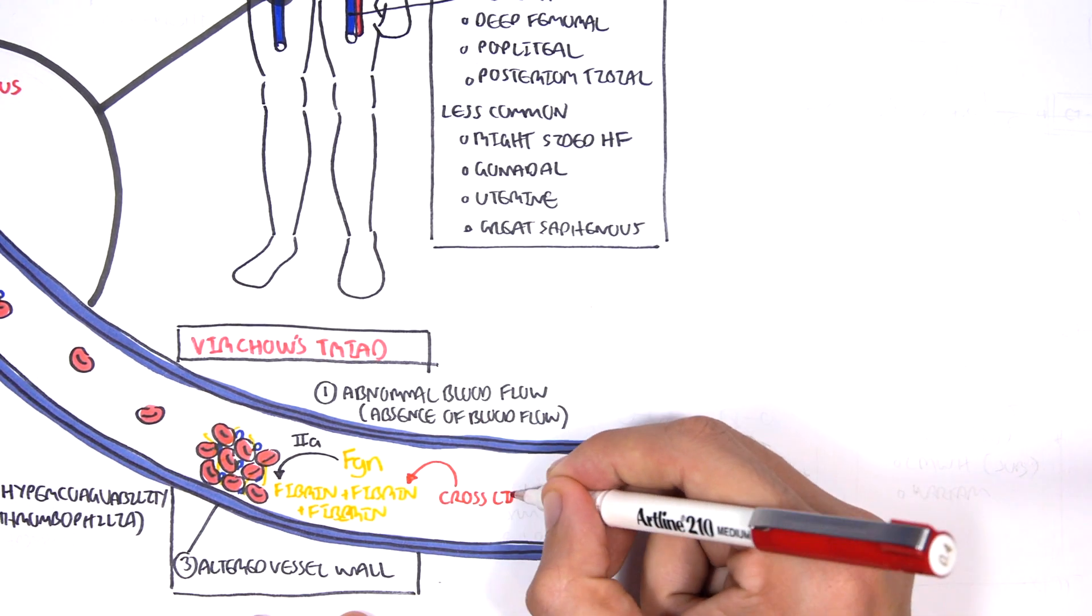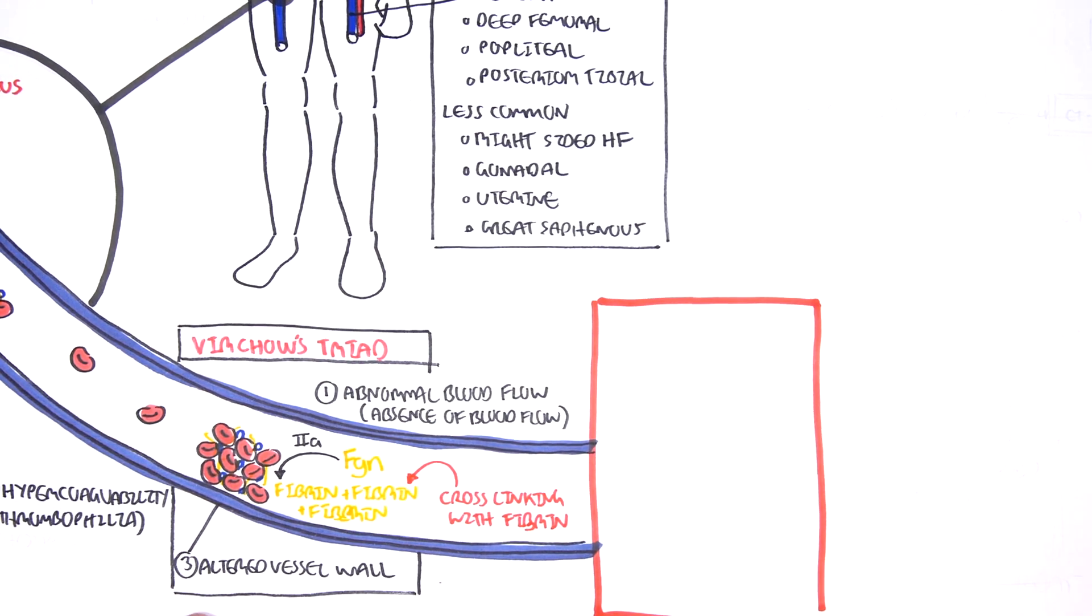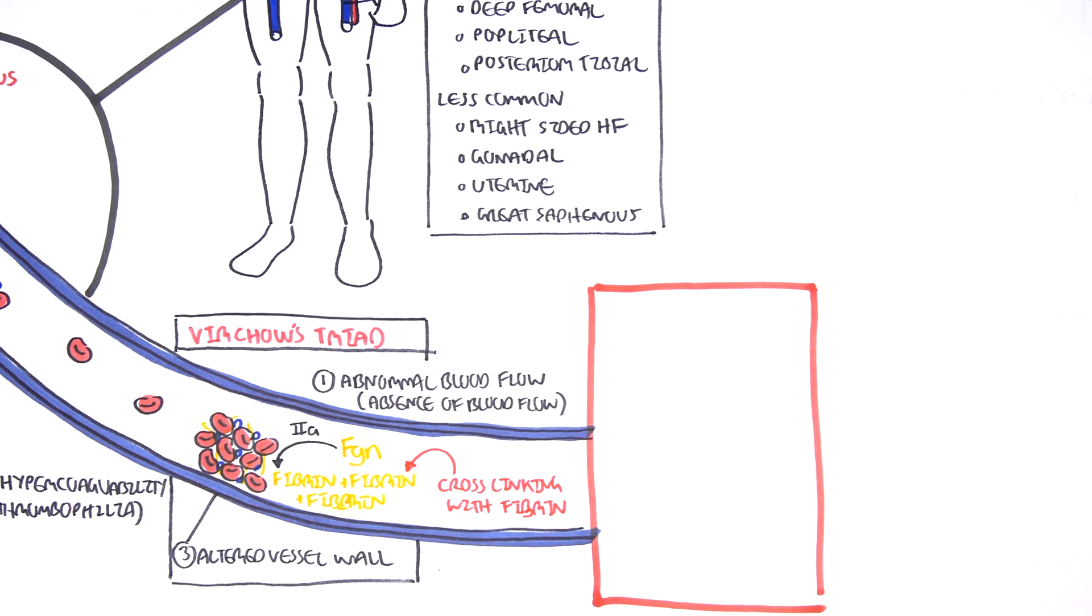Going back to this previous diagram where thrombi occurs, remember that fibrinogen becomes fibrin and you get fibrin cross-linking. Well let us look at this step in a bit more detail.